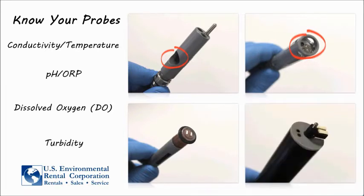Finally, here is the turbidity probe that can be installed on the 6820, 6920, and 6600 models.